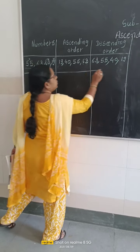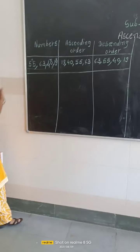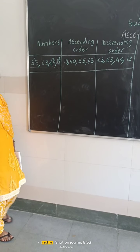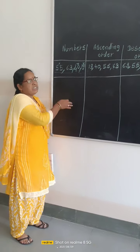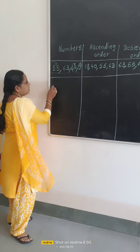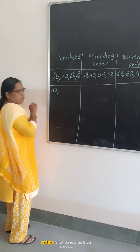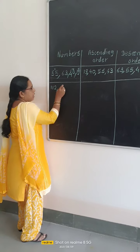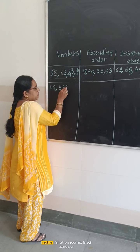Now I will explain again with the next example. This is only two-digit numbers. Then how can you arrange three-digit numbers in their descending and ascending order? Now I am writing three-digit numbers: 102.